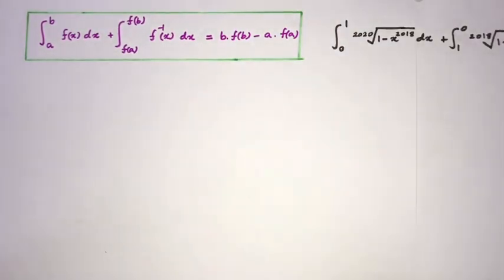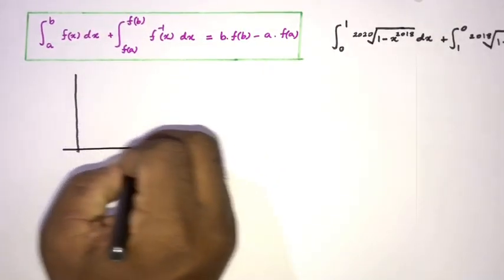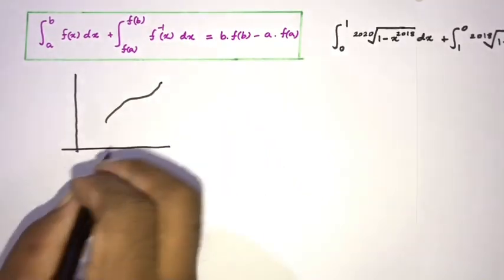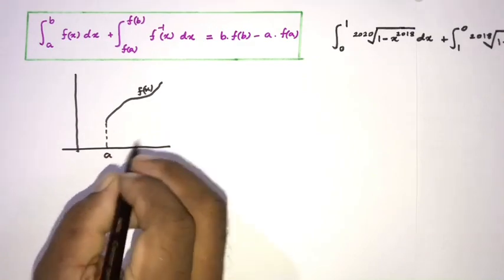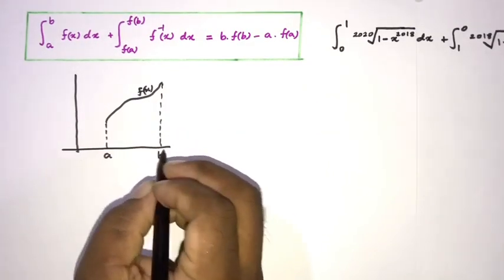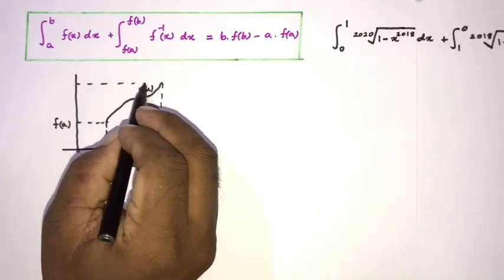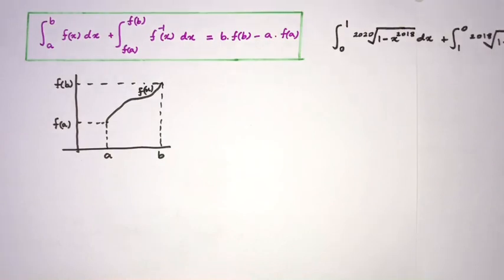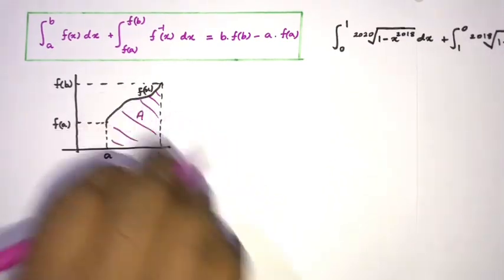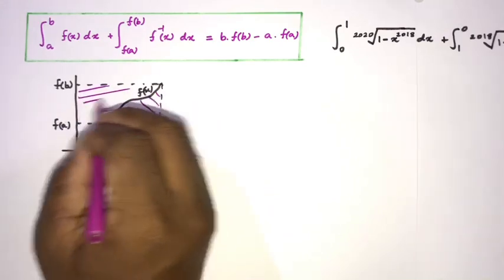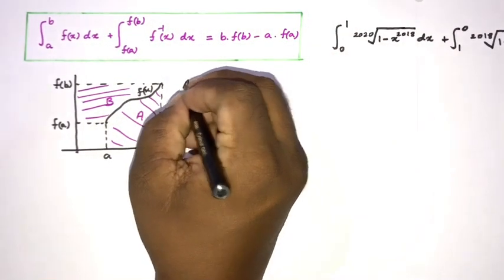First, if we take a strictly monotone function f(x) and draw a simple graph of f(x), I am going to take a point a and a point b. We know we can write f(a) and f(b). I am going to take this area as capital A and this area as capital B.